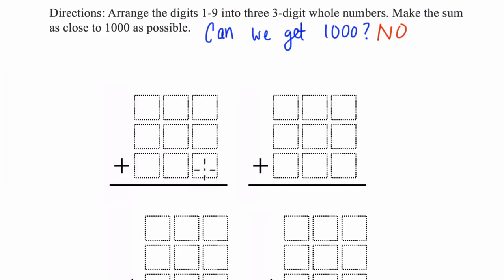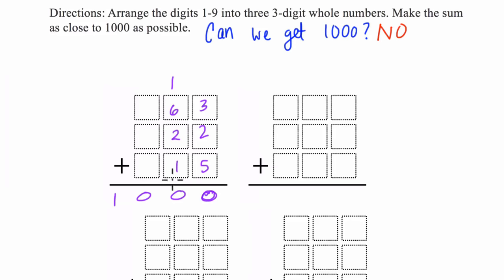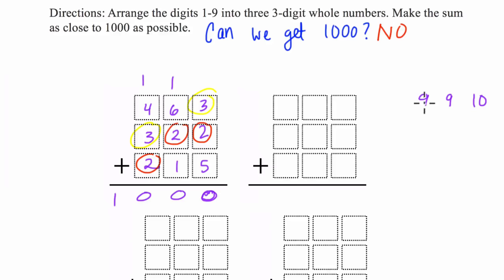The first thing to look at is all the ways of getting to 1,000. There are four ways, and each requires repeating digits. The first way: if we get a sum of 10 in the ones column — say 3 plus 2 plus 5 — that gives 10, carry the 1. Then a sum of 9 in the tens column — say 6 plus 2 plus 1 — plus the carried 1 gives 10, carry again. Then another sum of 9 in the hundreds column — say 4 plus 3 plus 2 — plus 1 gives 10, and we get 1,000.